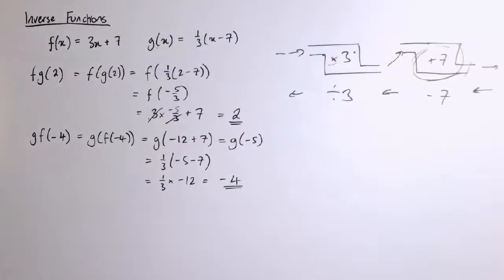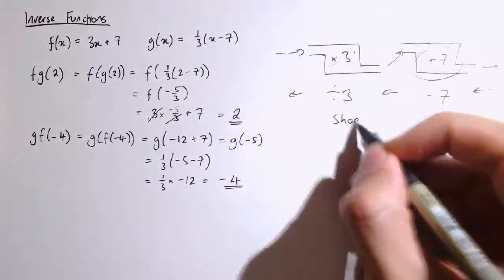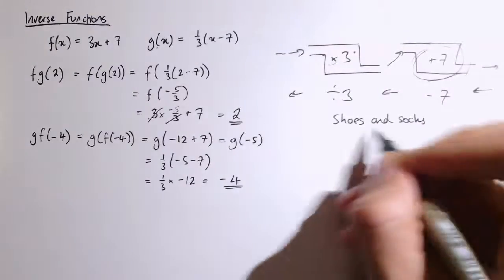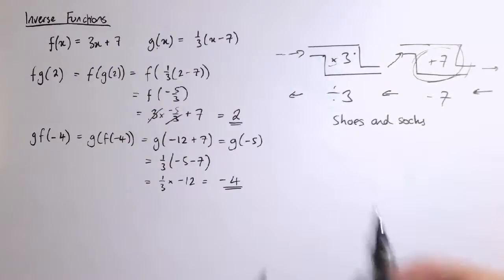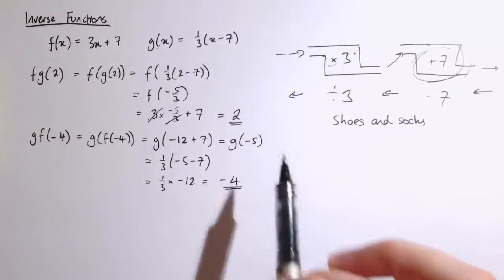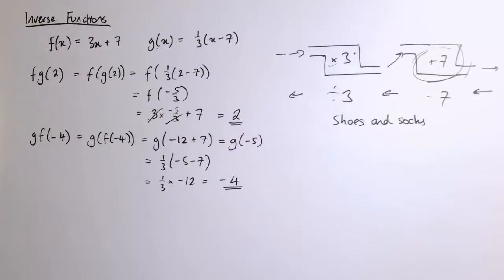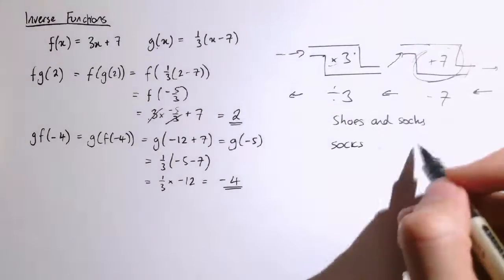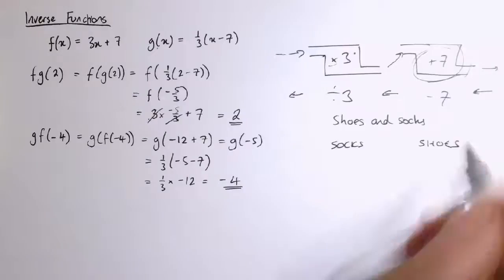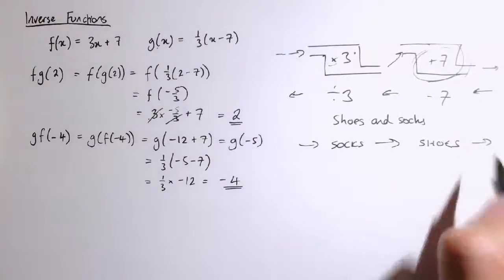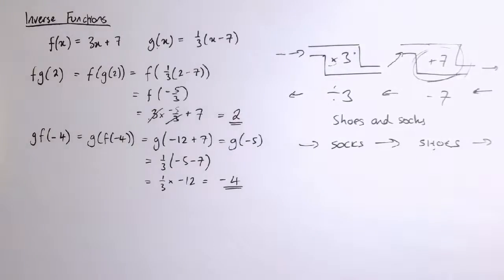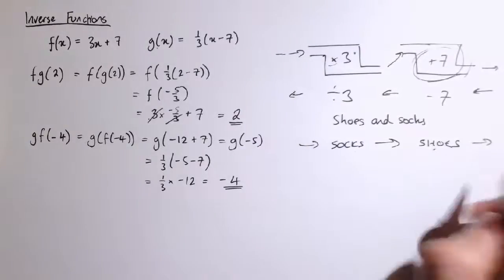So actually, this is sometimes what we call a shoes and socks method for thinking about the inverse, because we're just undoing the operations in the opposite order, the same as when you put your shoes and your socks on. You start by putting your socks on first, and then once your socks are on, you can put your shoes on. It's a process we go through in this order. But if we want to undo that and take them off, we have to first take off our shoes and then take off our socks afterwards, because otherwise we get in a bit of a mess.